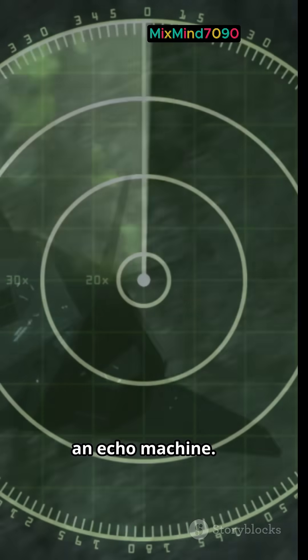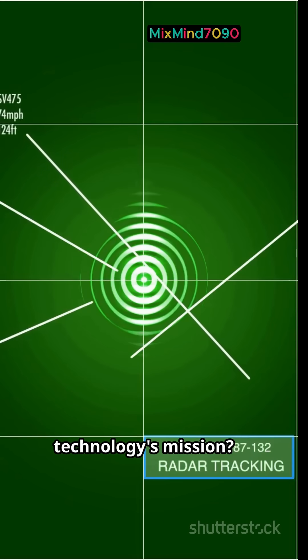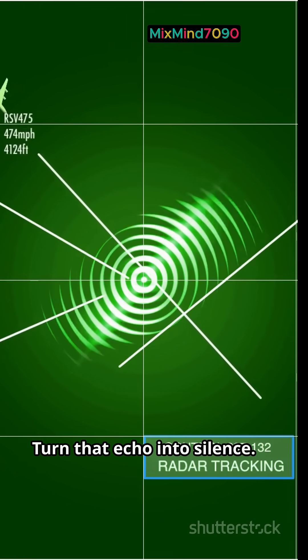Radar is basically an echo machine. It sends out waves, and metal planes bounce them straight back. A giant, unmistakable echo. Stealth technology's mission? Turn that echo into silence.